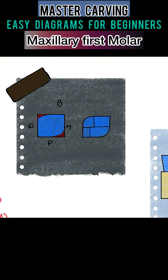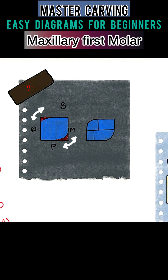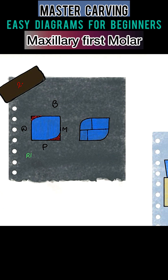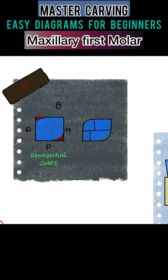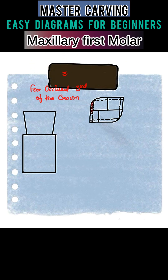For the occlusal part, we'll remove wax from the distobuccal and mesiopalatal ends to get the rhomboidal shape. Then mark the lines to identify the distobuccal, mesiobuccal, mesiopalatal, and distopalatal cusps.